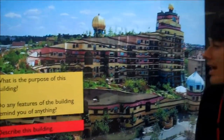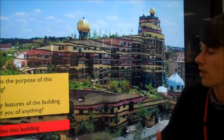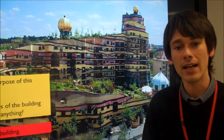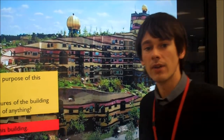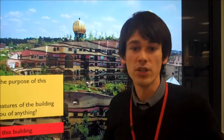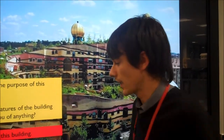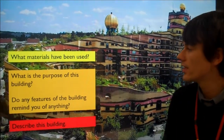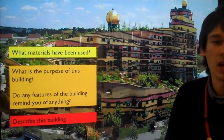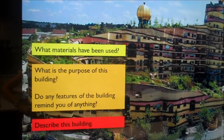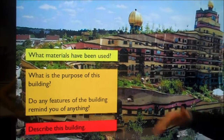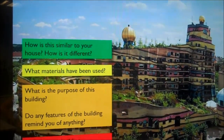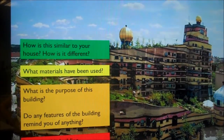Then we'll move up to understanding, so we're thinking about the purposes. This is really good because sometimes there might be a right answer, sometimes there might be a bunch of right answers, and that's fine. Then we move on to yellow, which is applying — so we're talking about the processes and the materials. We're moving up the scale, up Bloom's Taxonomy, into the middle order.